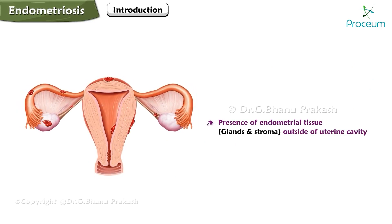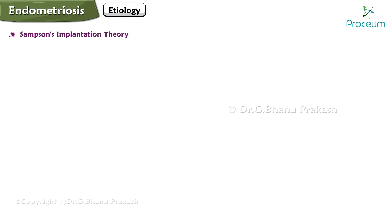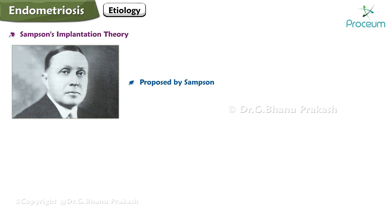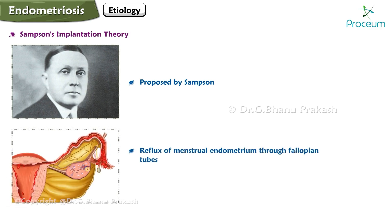Endometriosis is the presence of endometrial tissue, glands, and stroma outside of the uterine cavity. Regarding etiology, Sampson's implantation theory proposes that endometriosis occurs as a result of reflux of menstrual endometrium through the fallopian tubes.